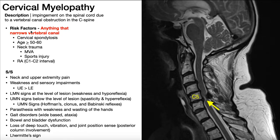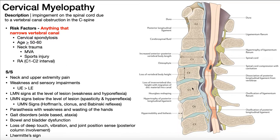The risk factors are really anything that narrows the vertebral canal and causes that impingement on the spinal cord. The first risk factor is cervical spondylosis — a fancy term for age-related degeneration of the spine. With spondylosis, the disc becomes desiccated, it dries out, the disc flattens, and we get the vertebral bodies coming closer and closer together. That can cause the disc to move out posteriorly and does produce a little bit of narrowing of that vertebral canal. Along those lines, simply being older — at least 50 or 60 years old — is itself a risk factor for cervical myelopathy.